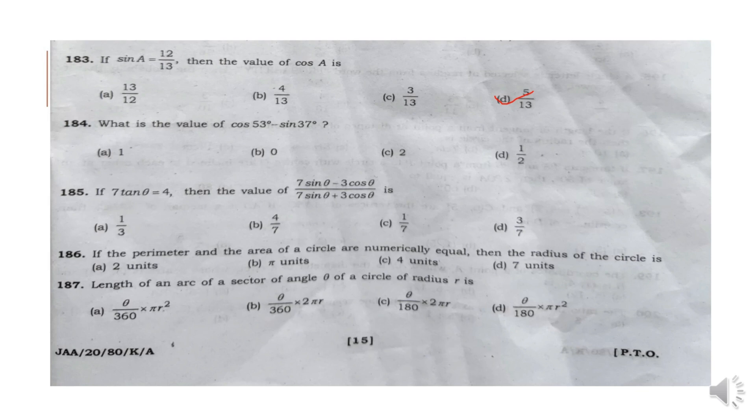Question 184: What is the value of cos 50 degrees minus sin 37 degrees? Answer: Option B: 0.